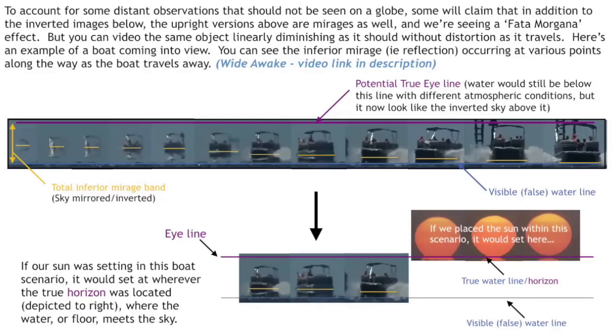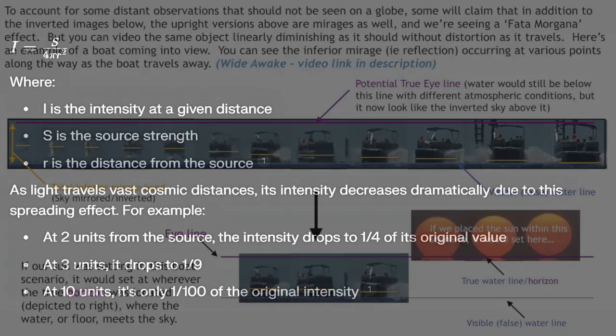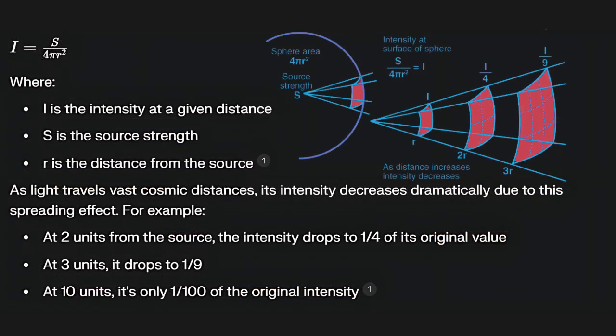If we go further into the math, we can say the inverse square law states that the intensity of light decreases proportionally to the square of the distance from the source. This means that as light travels further away, it spreads out even larger and becomes less intense, less visible.